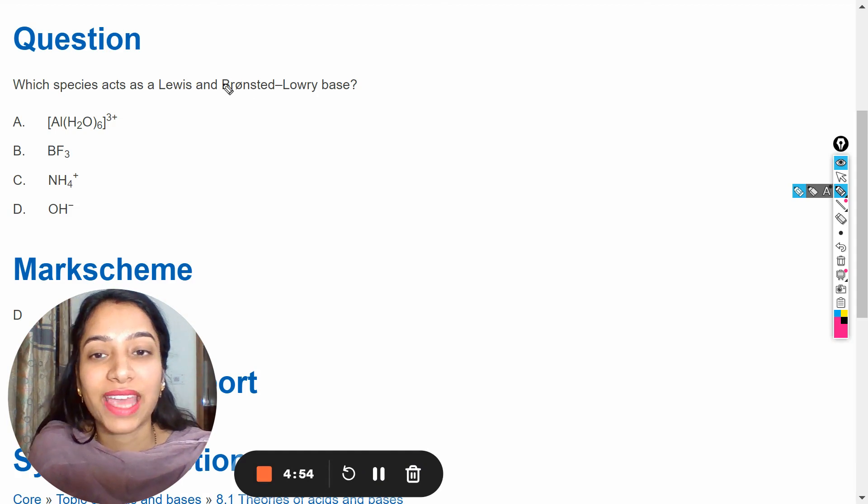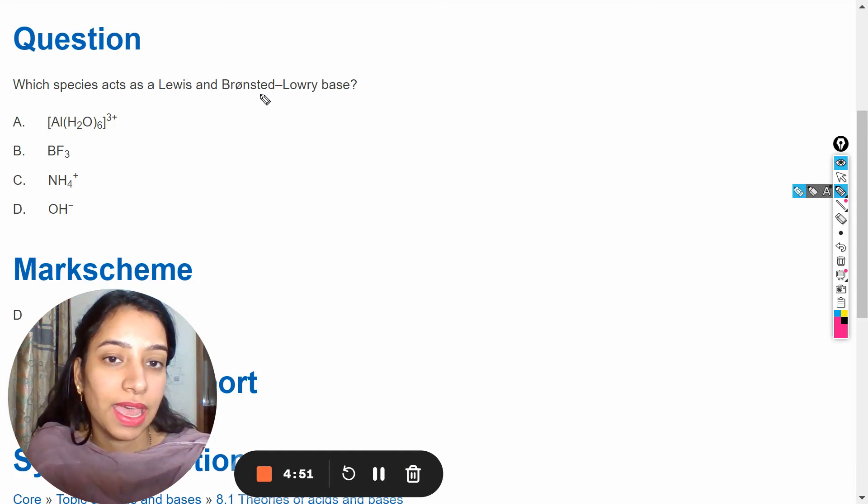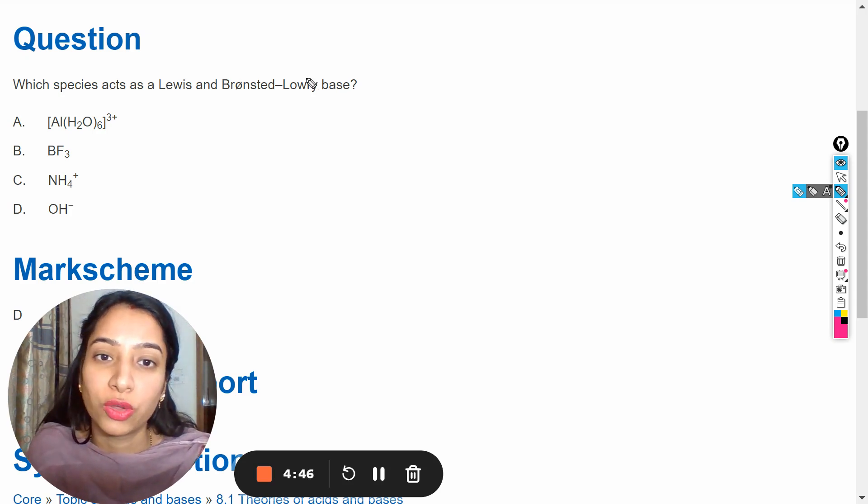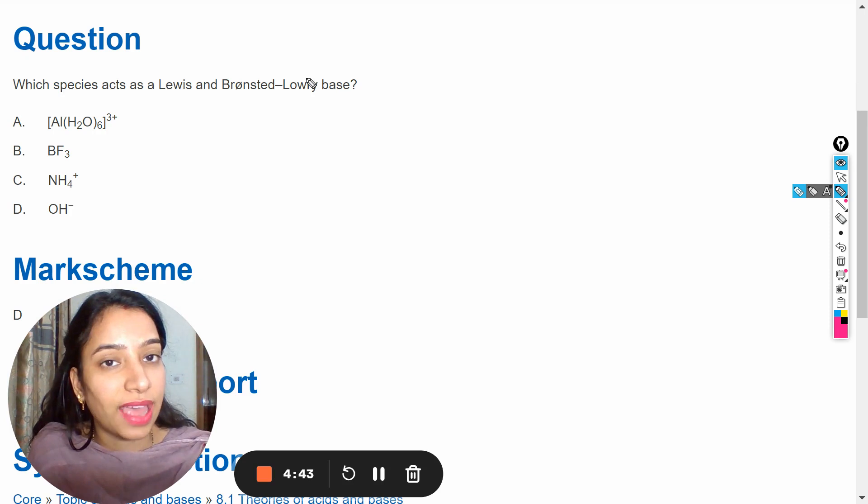Let's see which species act as a Lewis base and Bronsted-Lowry base. So firstly we have to understand the Lewis theory and Bronsted-Lowry theory of acids and bases.